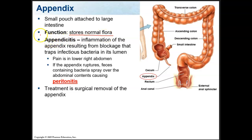Appendicitis is inflammation of the appendix, resulting from a blockage that traps infectious bacteria in the lumen of the appendix. The pain is in your lower right abdomen — a very sharp pain — and you need to get to the doctor immediately, because if your appendix ruptures, feces containing bacteria spray all over the abdominal contents. This can cause an infection called peritonitis. If your appendix is inflamed, you'll have surgery to have it removed.